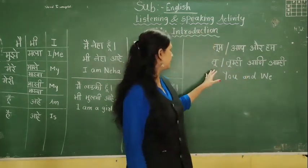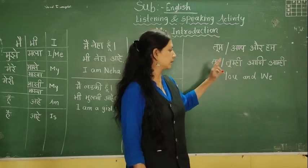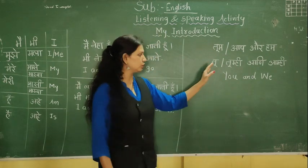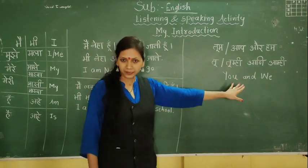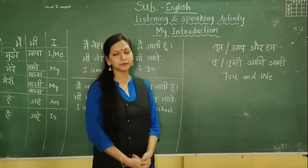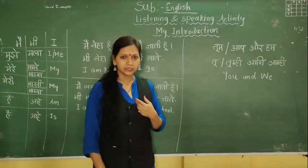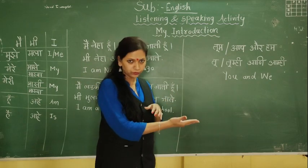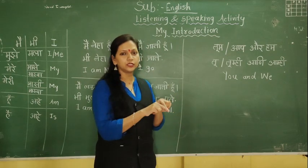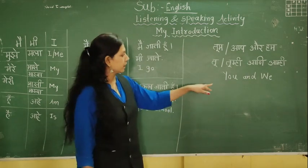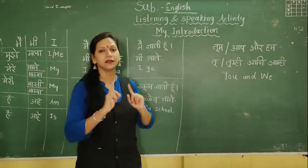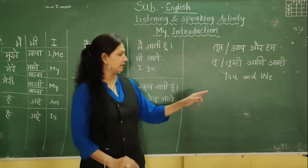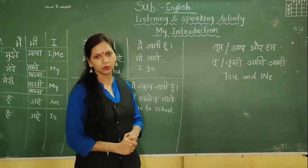So in three languages, let's talk about 'you' and 'we'. तुम, आप, और हम — these are Hindi. तू, तुम्ही, आणि आम्ही — these are Marathi. In English: you and we. तुम means you in English — you is both singular and plural. And we means आपण सगळे. हम, आम्ही means we — आपण सगळे. Okay.